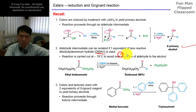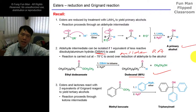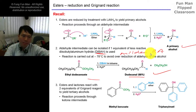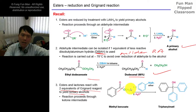If you use DIBAL-H, this is a milder reducing agent, so it will only stop at the aldehyde. This is very useful if you want to make an aldehyde from an ester. For esters and lactones, they react with two equivalents of Grignard reagent to give a tertiary alcohol. The first equivalent cuts open the ester, and the second adds to it.